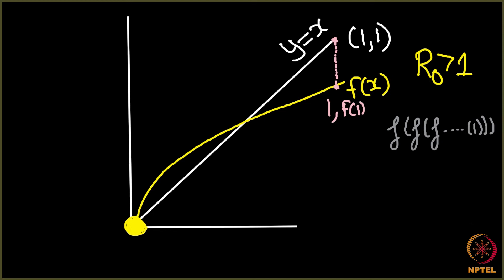Now let me draw a line horizontally over here. When I draw a line horizontally, the value of x changes. This line is y equals x, so the value of x here becomes equal to the value of y, which is f(1). So I get a point here: (f(1), f(1)). Now I draw a line vertically again — the x-axis value remains f(1), and the y-axis becomes f(f(1)). So you see how we are moving: from 1 to f(1) to f(f(1)).